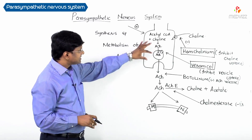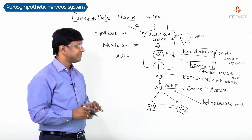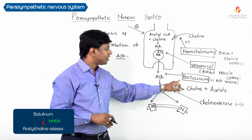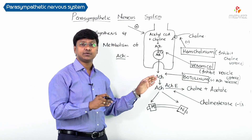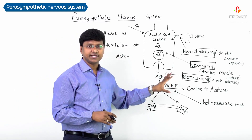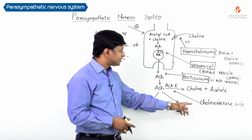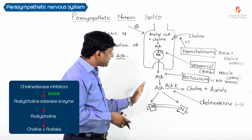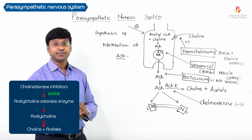At the third step, acetylcholine stored in vesicles is released upon stimulation — botulinum toxin inhibits this release from the cholinergic neuron. At the fourth step, cholinesterase inhibitors inhibit acetylcholinesterase, thereby preventing metabolism of acetylcholine into choline plus acetate. This completes the discussion of acetylcholine synthesis and metabolism.